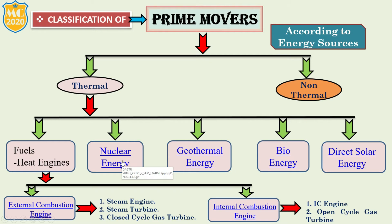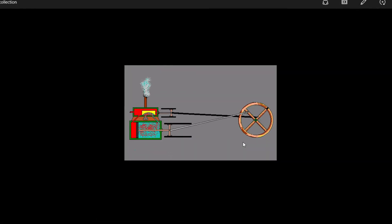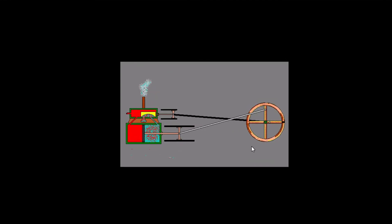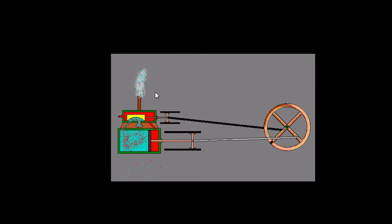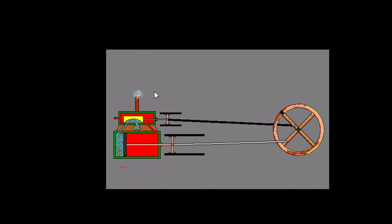The external combustion engine means the fuel burns outside and away from the main part of the engine where force and motion are produced. The simple example is the steam engine. In a steam engine, fire at one end heats water to make steam. This is the external combustion engine.